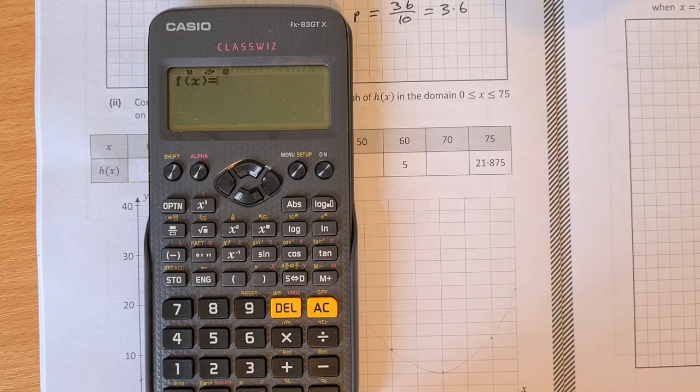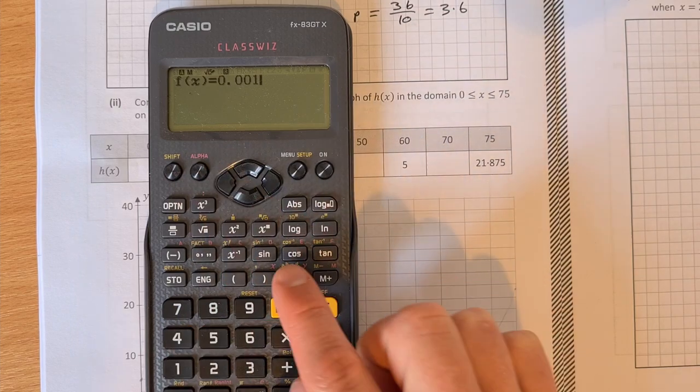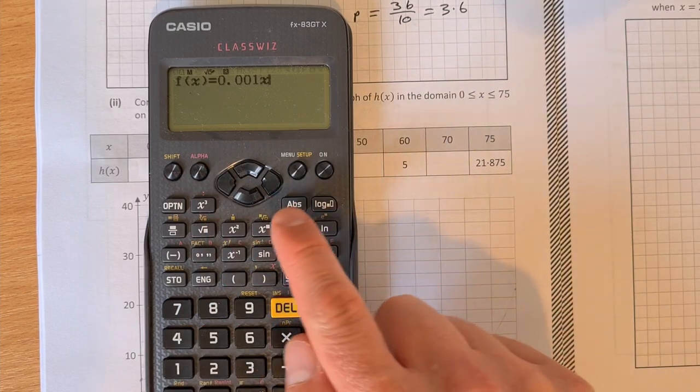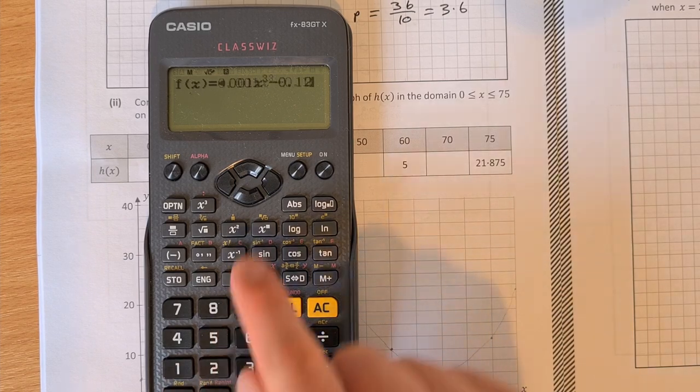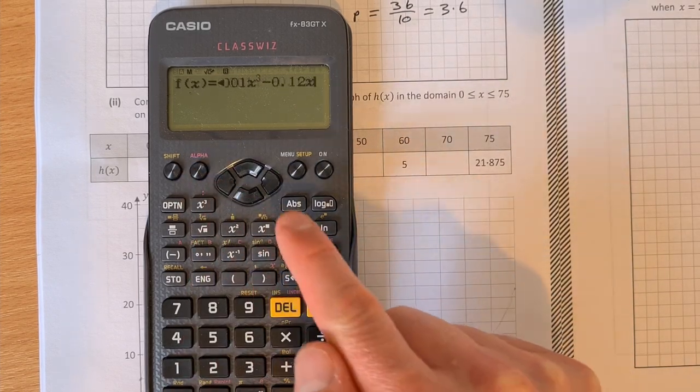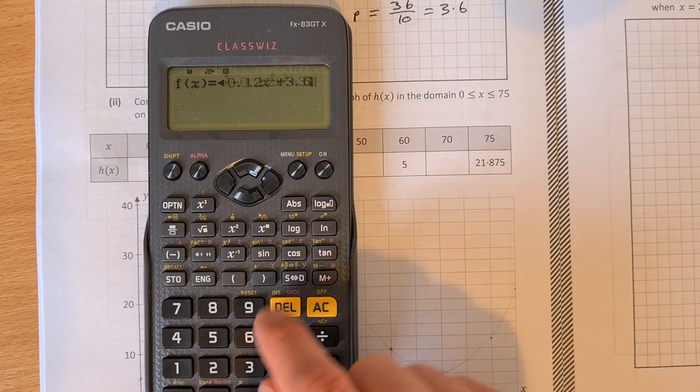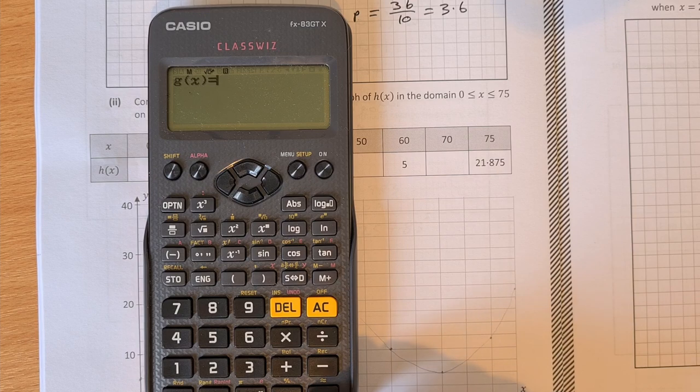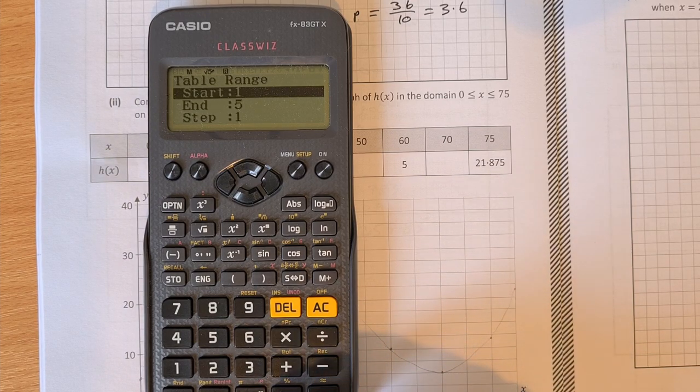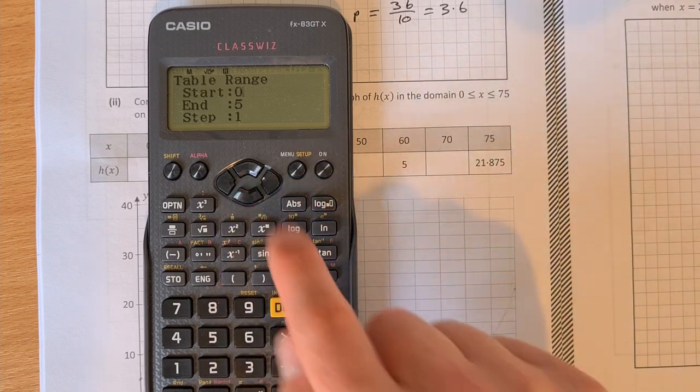So now we have to type in our function. So our function is 0.001 alpha x, and that's cubed, minus 0.12 alpha x squared, plus 3.6 alpha x, plus 5. So that's our function. We don't want a g of x function, just one function is enough. We're going to start at 0, we're going to end, 0 press equals.